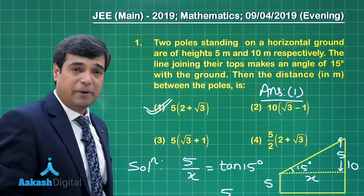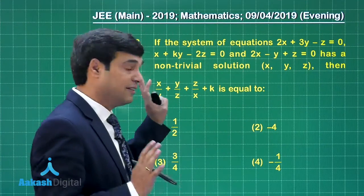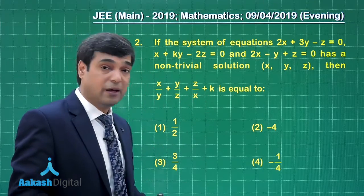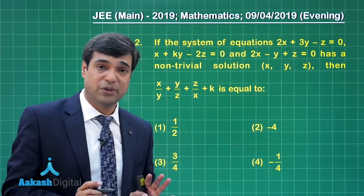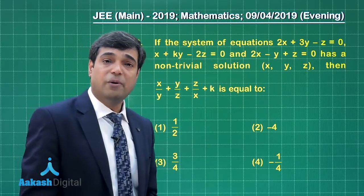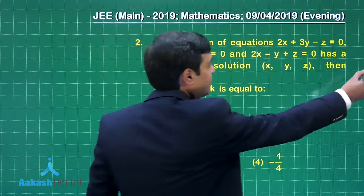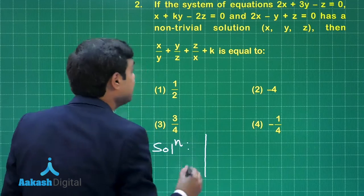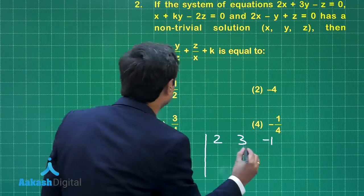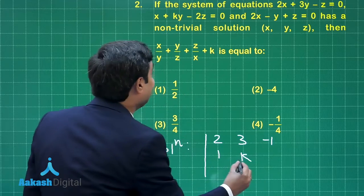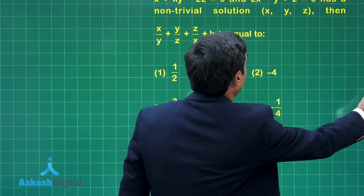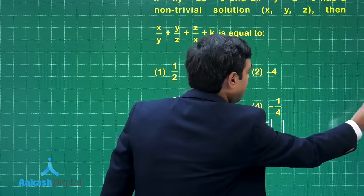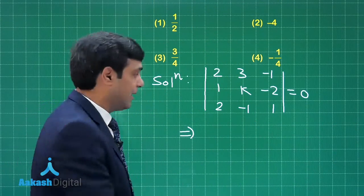Let us move on to the second question. The system of three equations has a non-trivial solution. We need to find the value of a certain term. For a system of homogeneous equations to have a non-trivial solution, the determinant formed by the coefficients must be zero. Forming the determinant using the coefficients: 2, 3, −1 / 1, 1, k / −2, 2, −1, and setting it equal to zero.